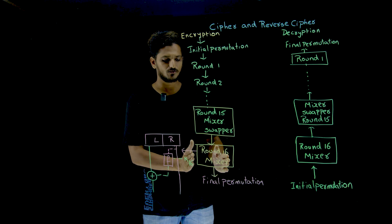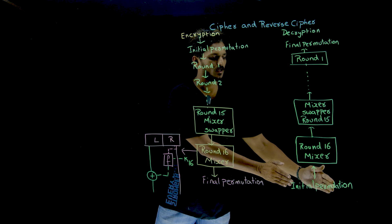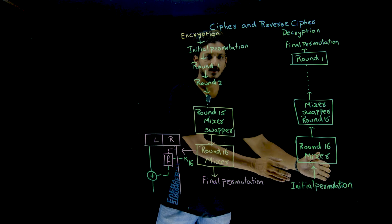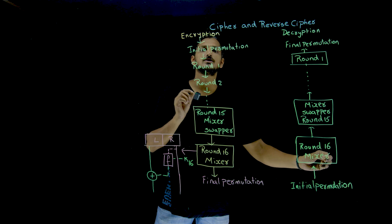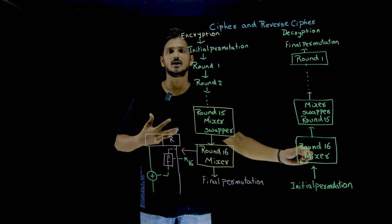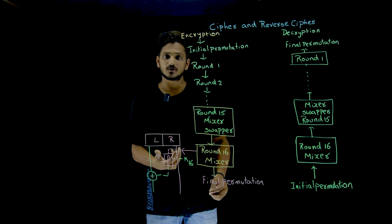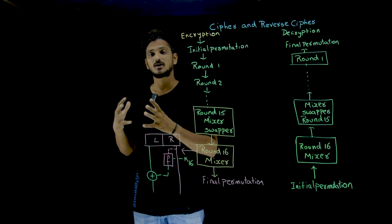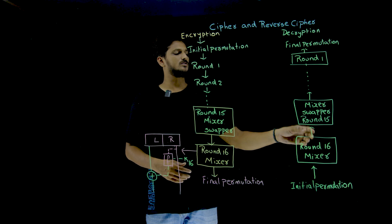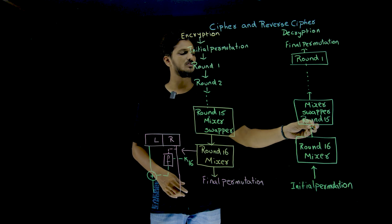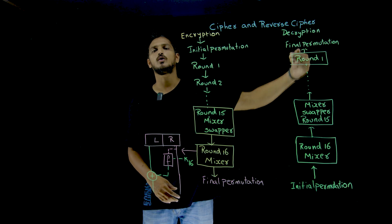The right hand side as-is will move to the decryption side. After initial permutation, the right hand side will be exactly in the right hand side. Now the right hand side will move into the mixer — it will move into the Feistel function. These basics were already discussed; why the right hand side is needed in the Feistel function was clearly explained in our previous classes. The remaining rounds follow the same pattern — after coming out of the 16th round, 15th round, next and so on up to the first round, then final permutation, and you obtain the plain text.